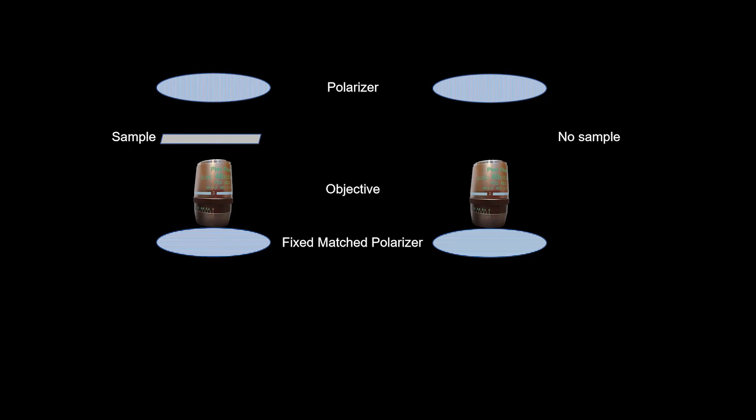If you don't have a sample in the pathway and you put both polarizers in, you should not have any light coming through. It should look dark.